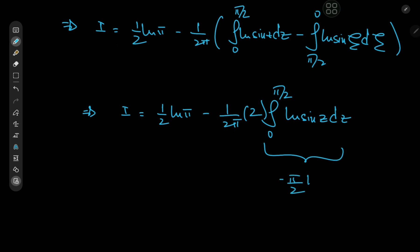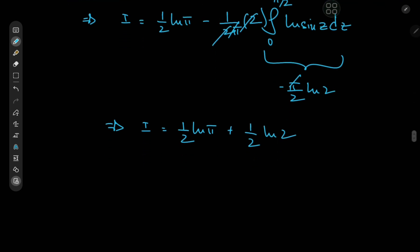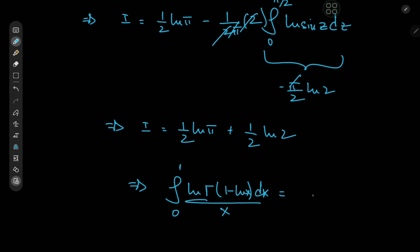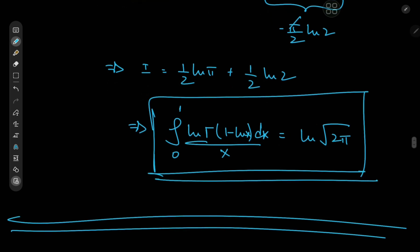Substituting Euler's result in, we have I = ½ log π − (1/π) · (−π/2) · log 2. The π's cancel and the two negatives cancel, leaving I = ½ log π + ½ log 2. Using logarithm properties, this compresses to log√(2π). So our original integral ∫₁ᵉ log·Γ(1 − log x) / x dx = log√(2π) — quite a beautiful result.